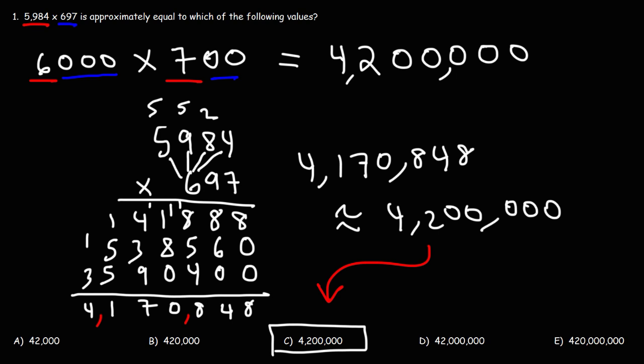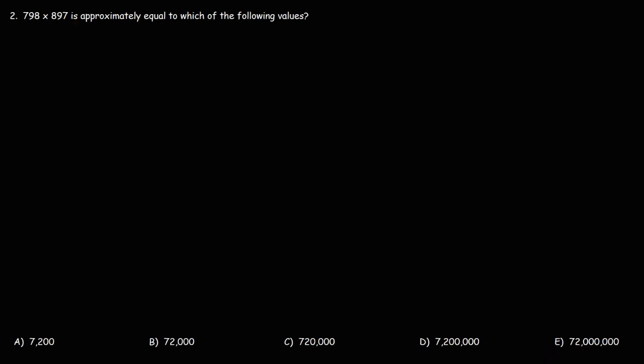Now, let's work on another example for the sake of practice. Number 2. 798 times 897 is approximately equal to which of the following values? So, for the sake of practice, feel free to pause the video and try this example based on how we solved the last one.